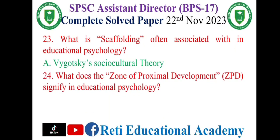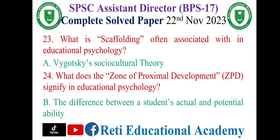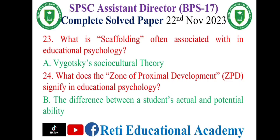Question number 24: What does the Zone of Proximal Development (ZPD) signify in educational psychology? The correct option is B — the difference between a student's actual and potential ability.